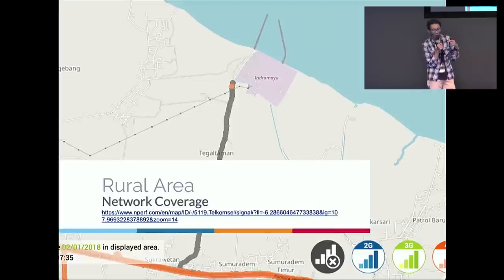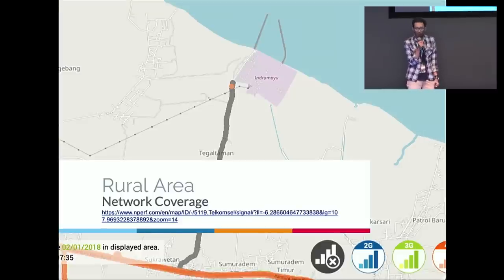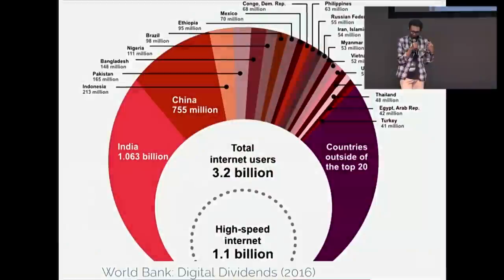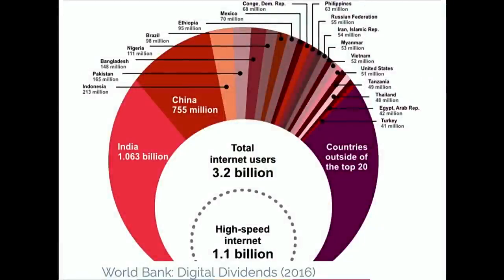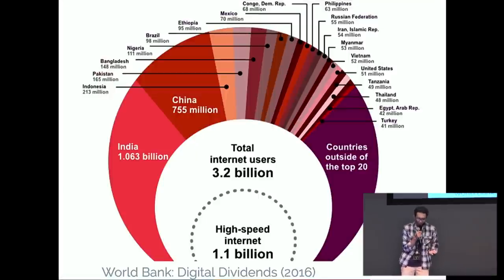That one is north of Java. If you've ever heard of Java in Indonesia — not just Bali. I often meet people and they ask where I'm from; I say Indonesia, and they say 'Oh, Bali!' But I'm from Bandung, Indonesia. Anyway, this data comes from 2016: we have 3 billion internet users, but just 1 billion get access to high-speed internet — just one-third of total users. The others are still living with a connection, but not necessarily a good one. The top countries for this are India, China, and Indonesia — my country comes third.